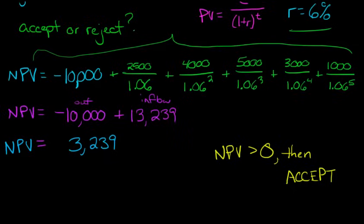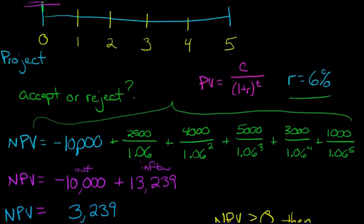And then, of course, $3,239 is greater than zero, so we would accept by this rule. Now let's explain this rule here in a little more detail. What is this saying if the net present value is greater than zero? Well, remember our discount rate that we chose of 6%?